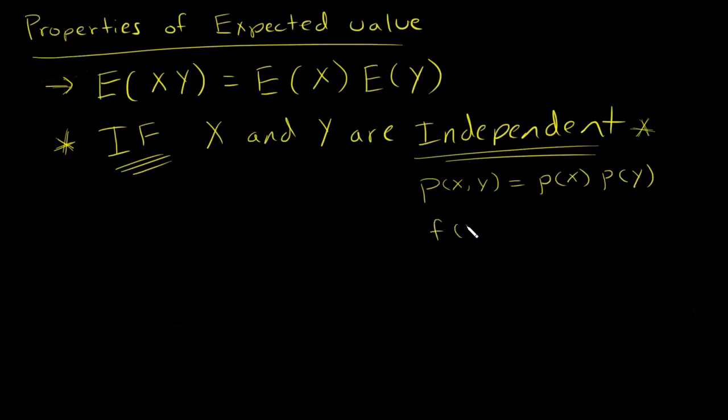If you have a continuous random variable X and Y, same thing, except now it's your probability density functions and it's the product of their marginals. So that's what independence means.